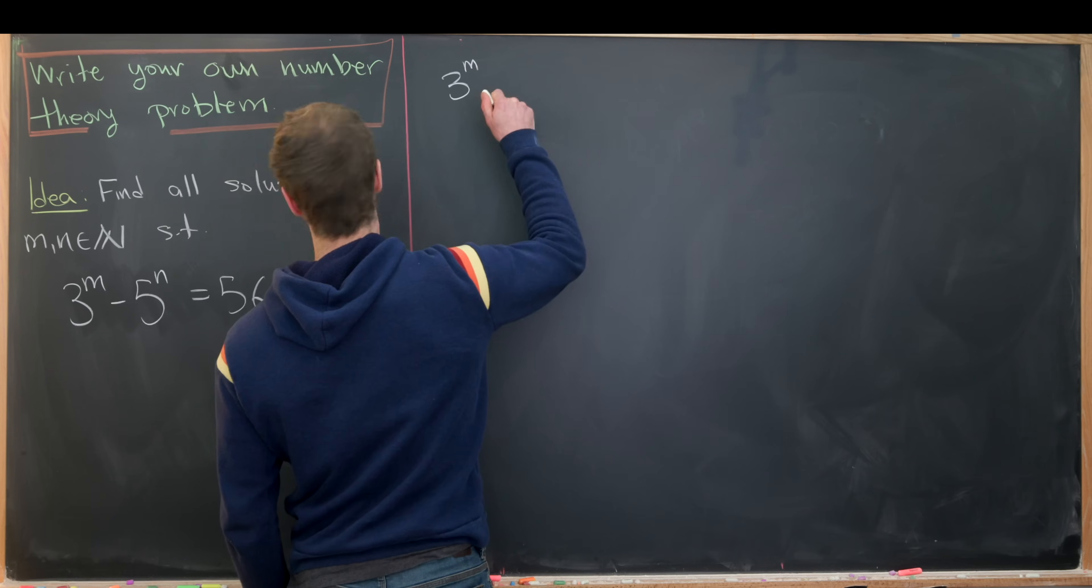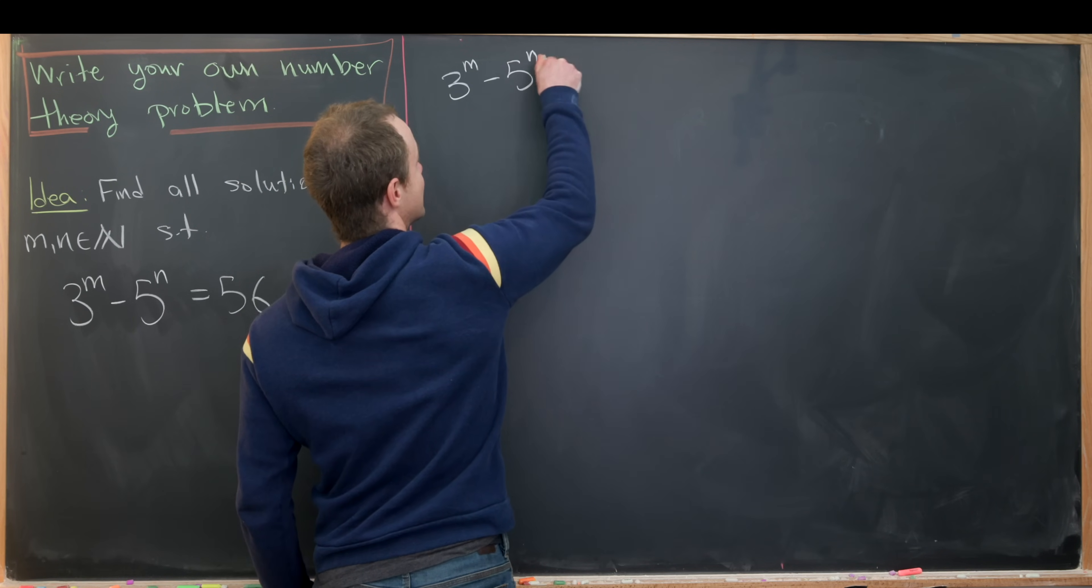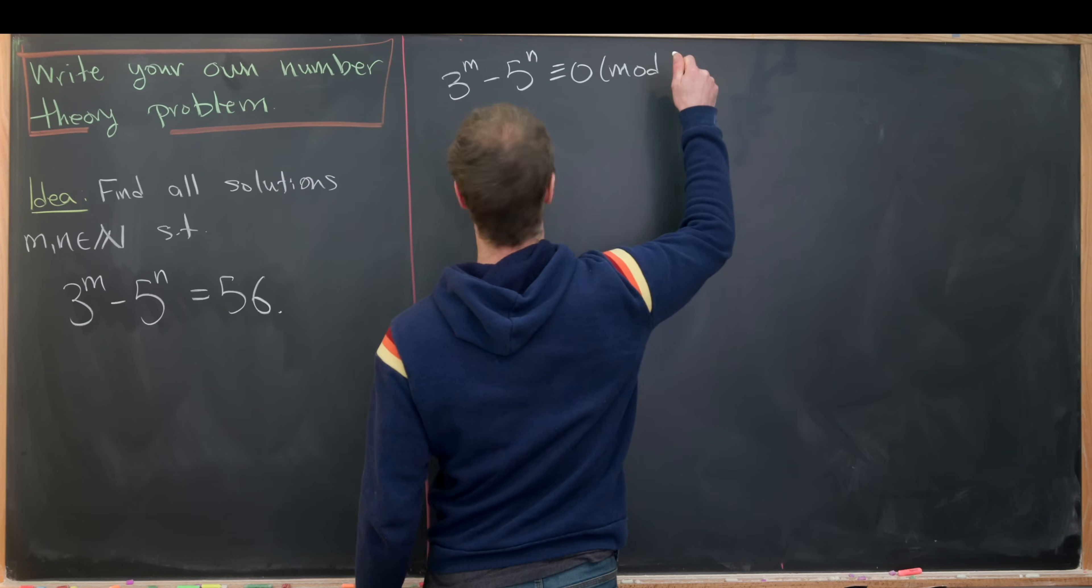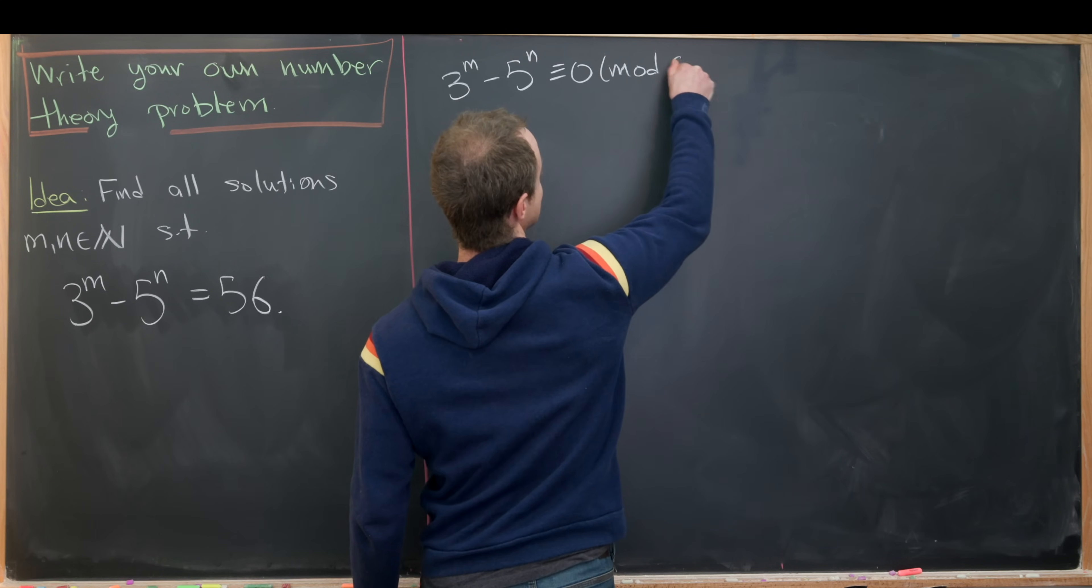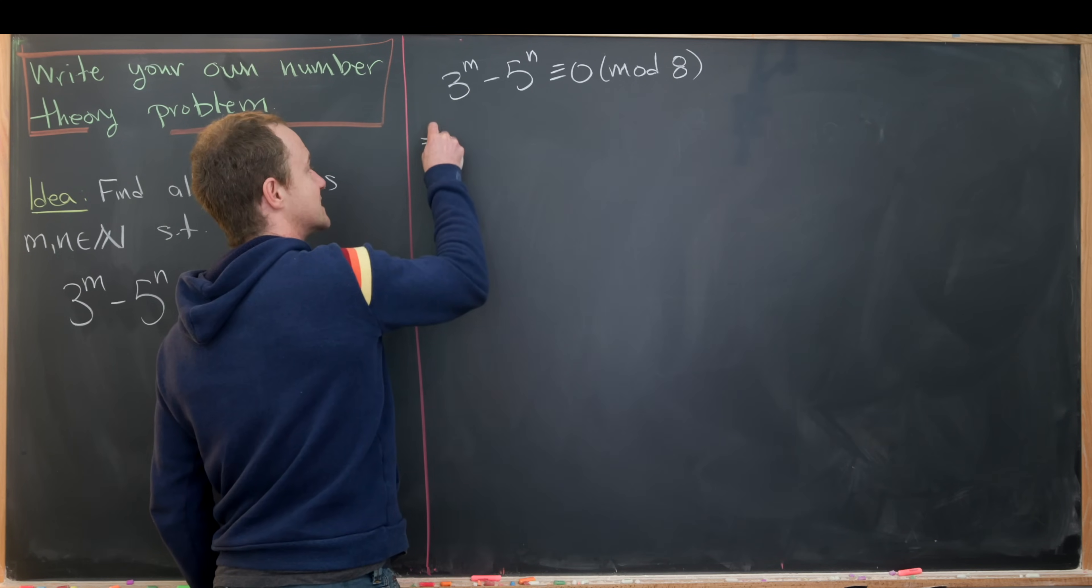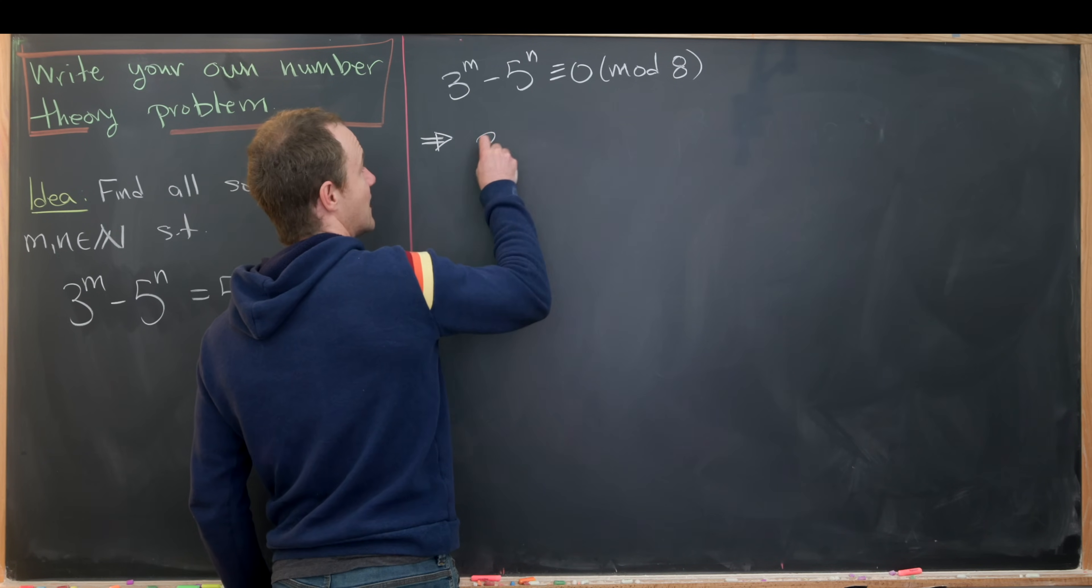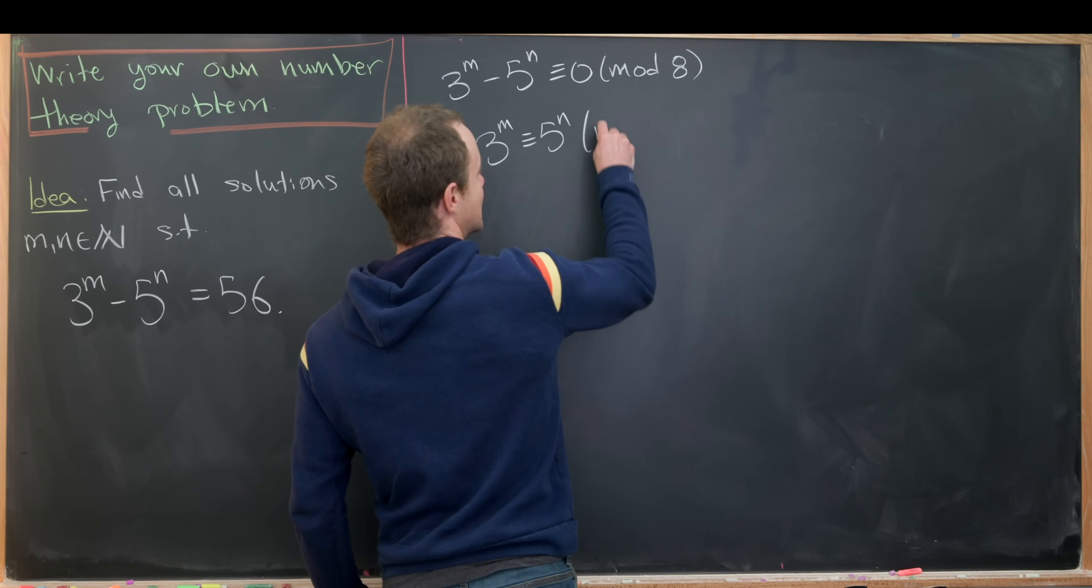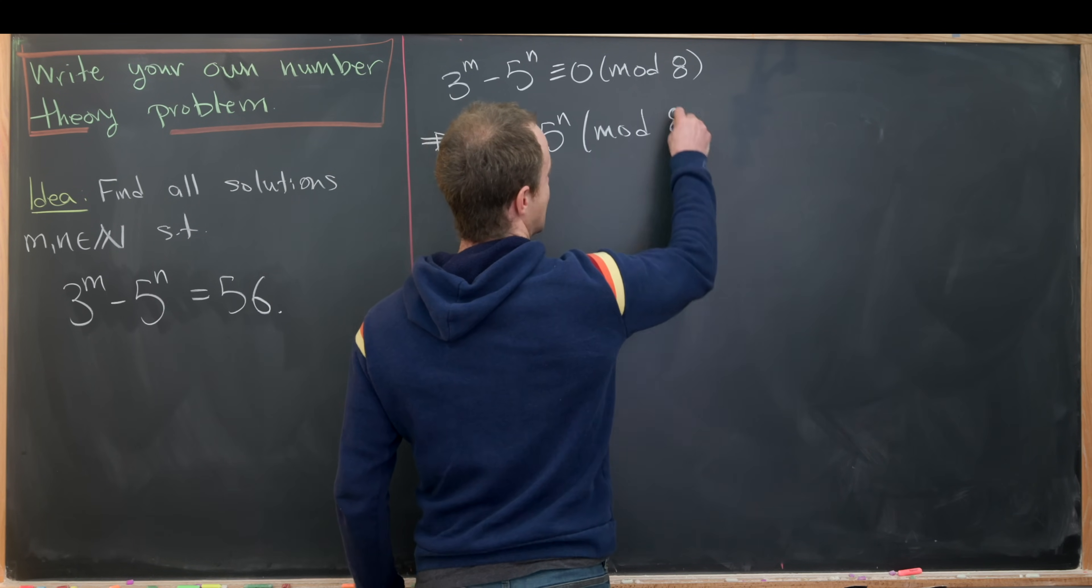We have 3 to the m minus 5 to the n is congruent to 0 mod 8, because 56 is 8 times 7—it's a multiple of 8. But that tells us that 3 to the m is congruent to 5 to the n modulo 8.